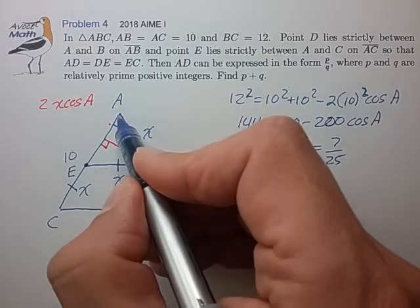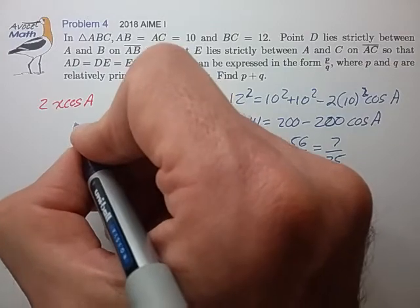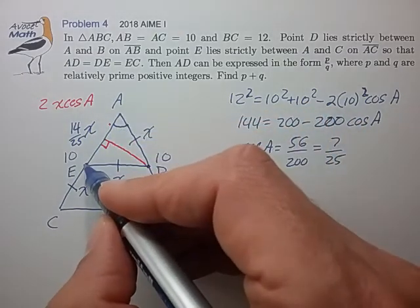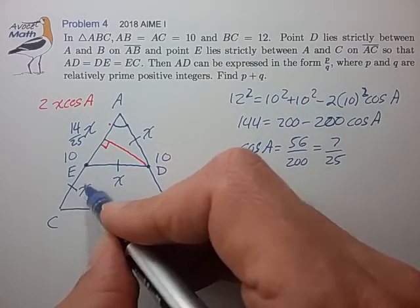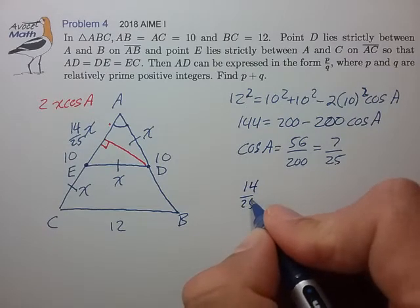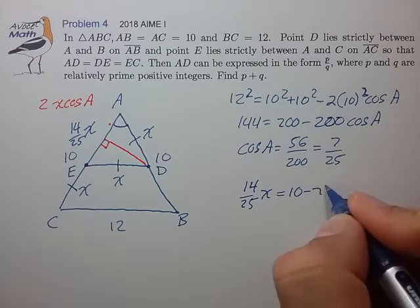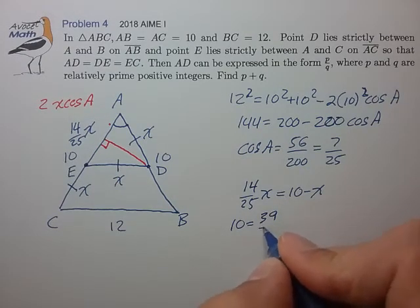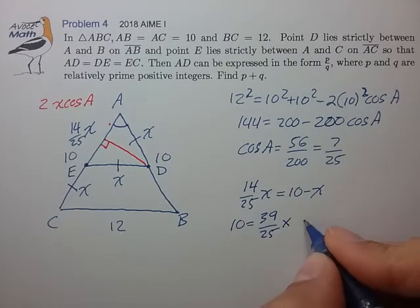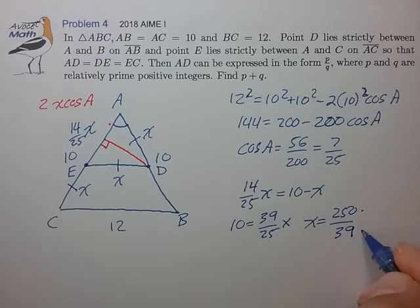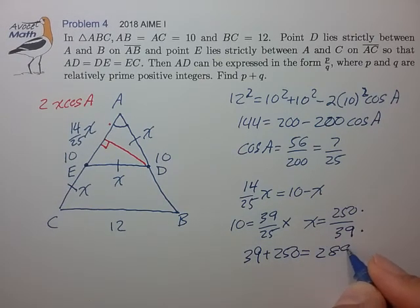We then know that the length from A to E is 14/25 times X. We also know that AE equals 10 minus X. So that sets up the equation 14/25 X equals 10 minus X, from which 10 equals 39/25 of X. So X equals 250 over 39. That looks like a reduced fraction. 39 plus 250 equals 289. Final answer.